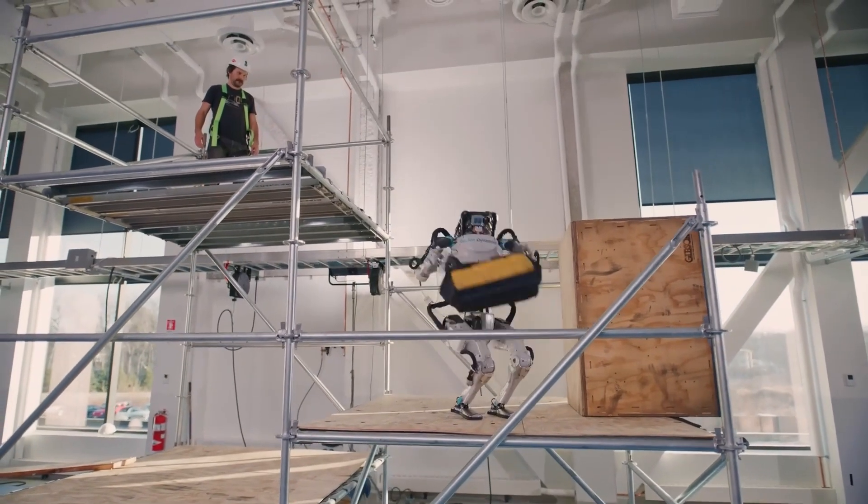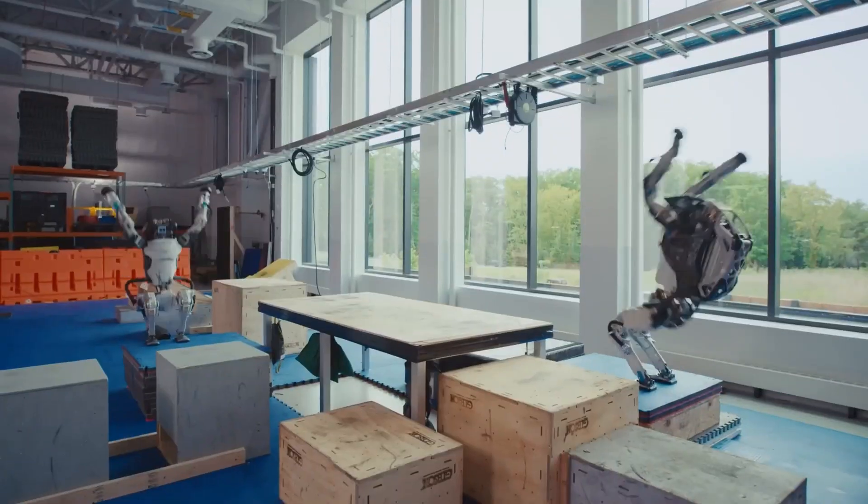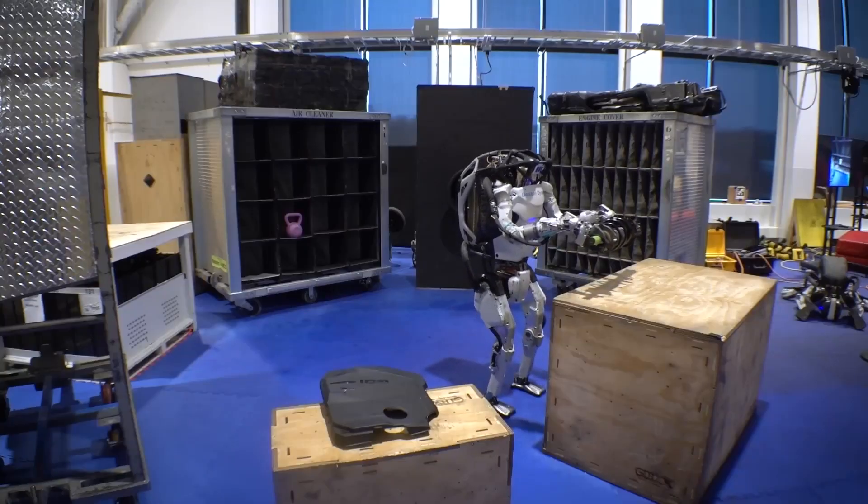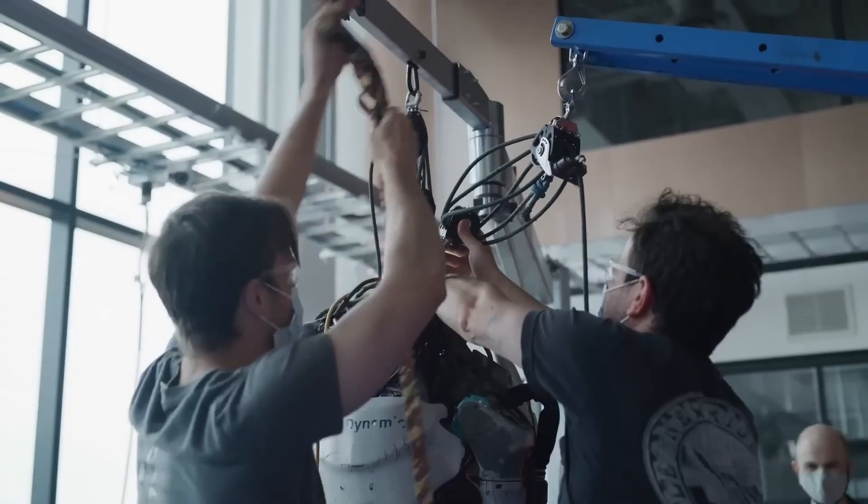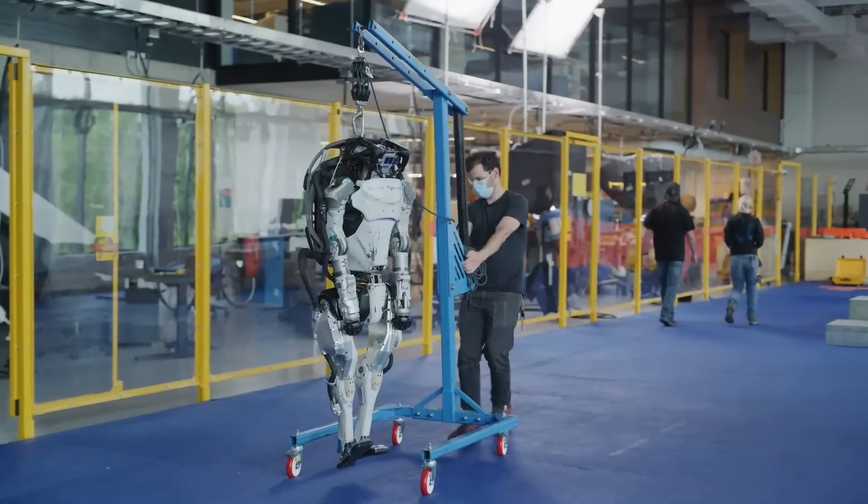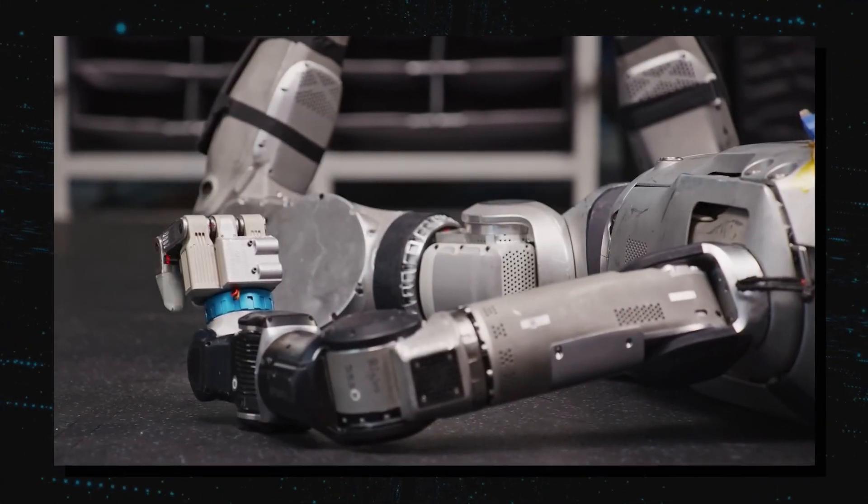The old Atlas was a powerhouse, running, jumping, flipping, and pushing the limits of what a humanoid robot could do. But as the team at Boston Dynamics pointed out, there was a big problem, hydraulics.